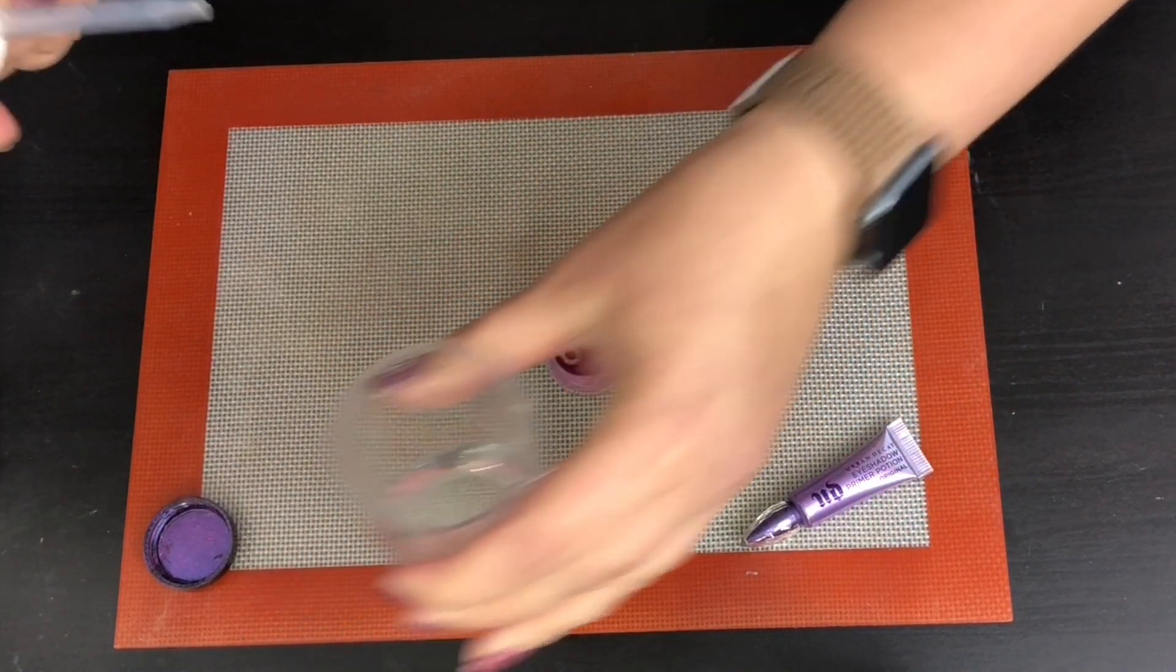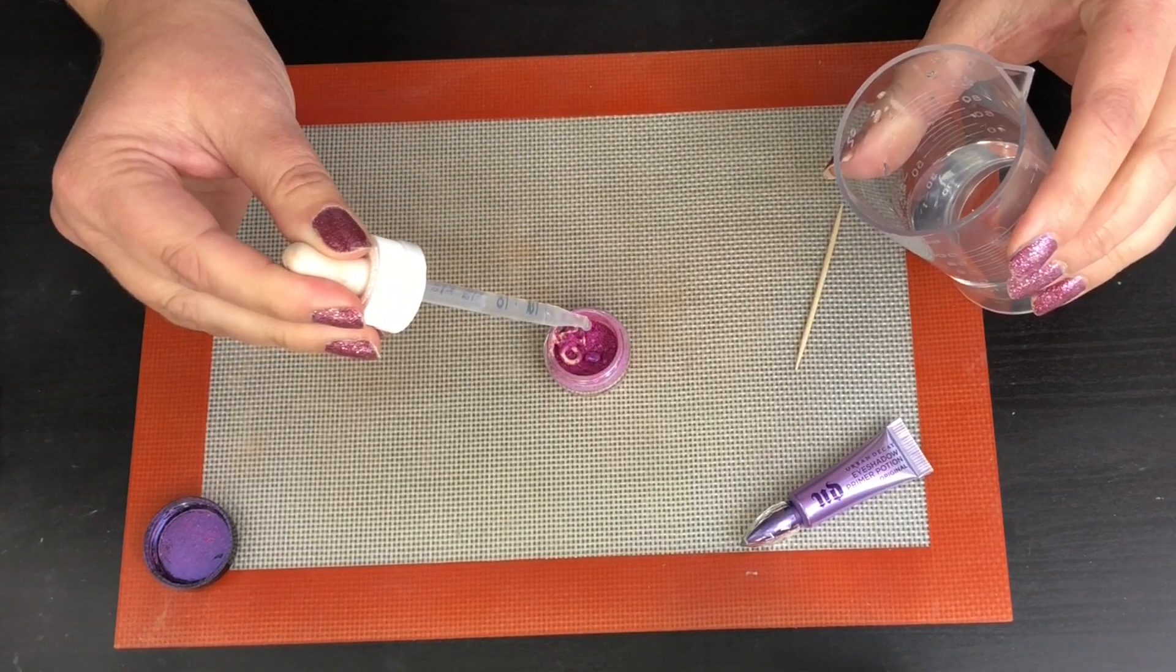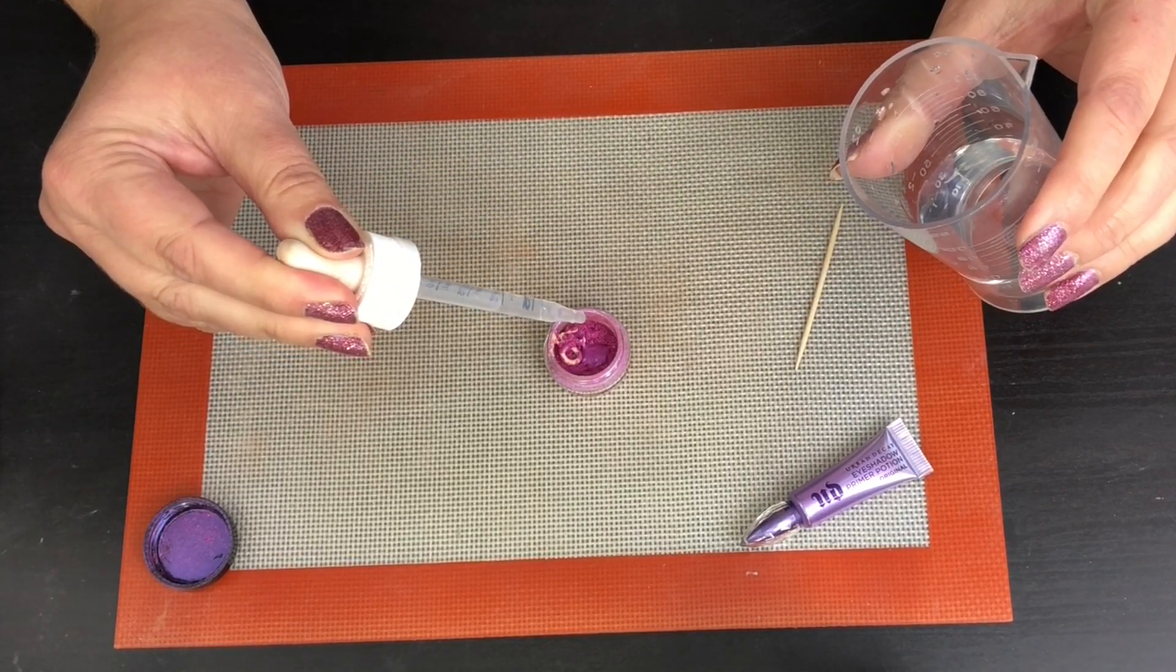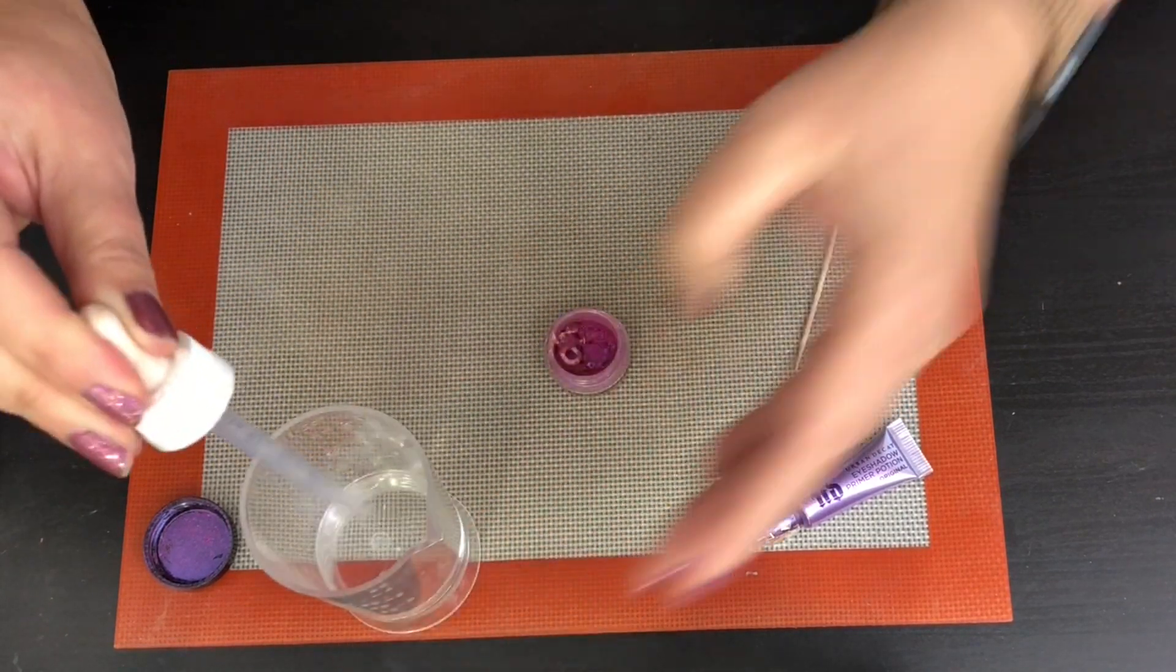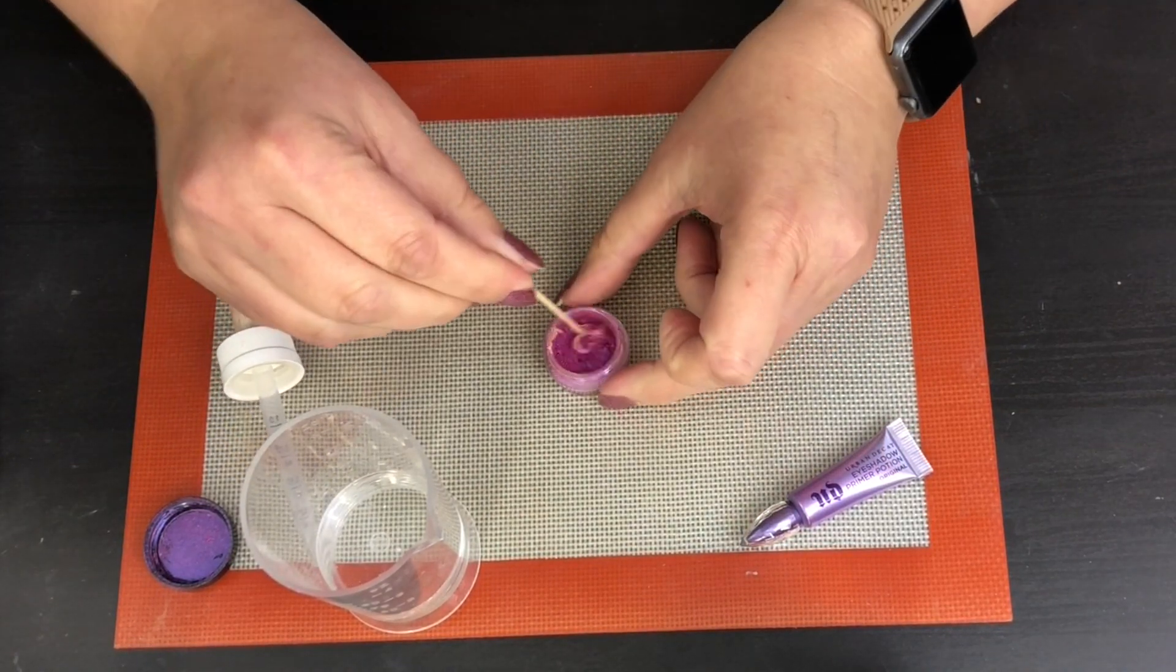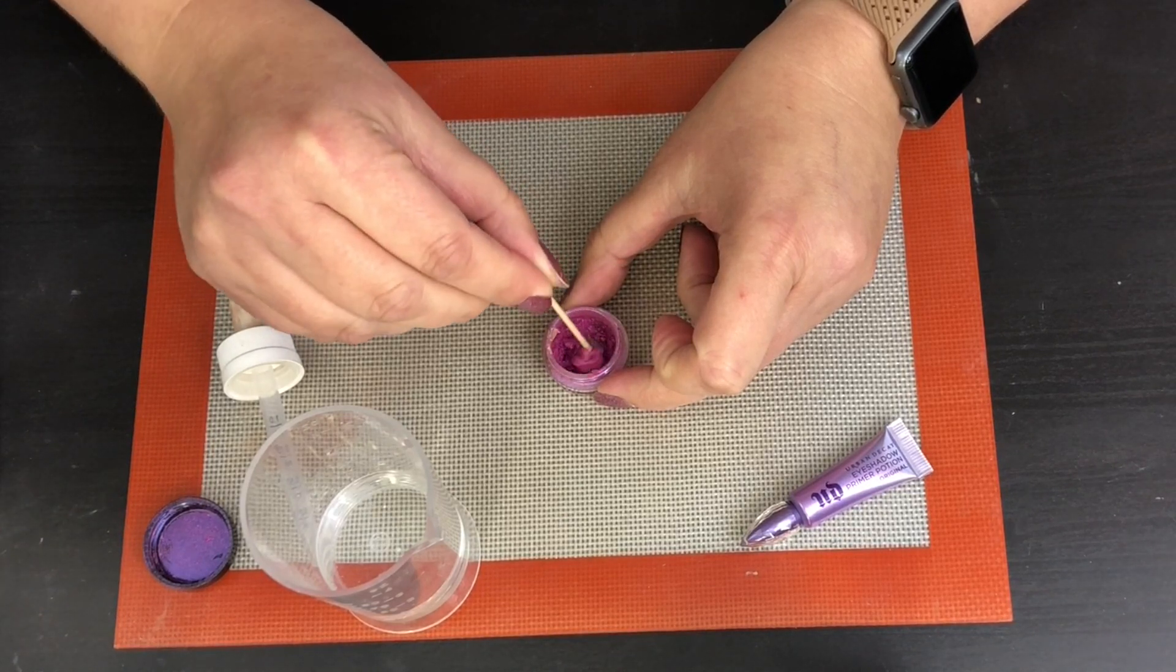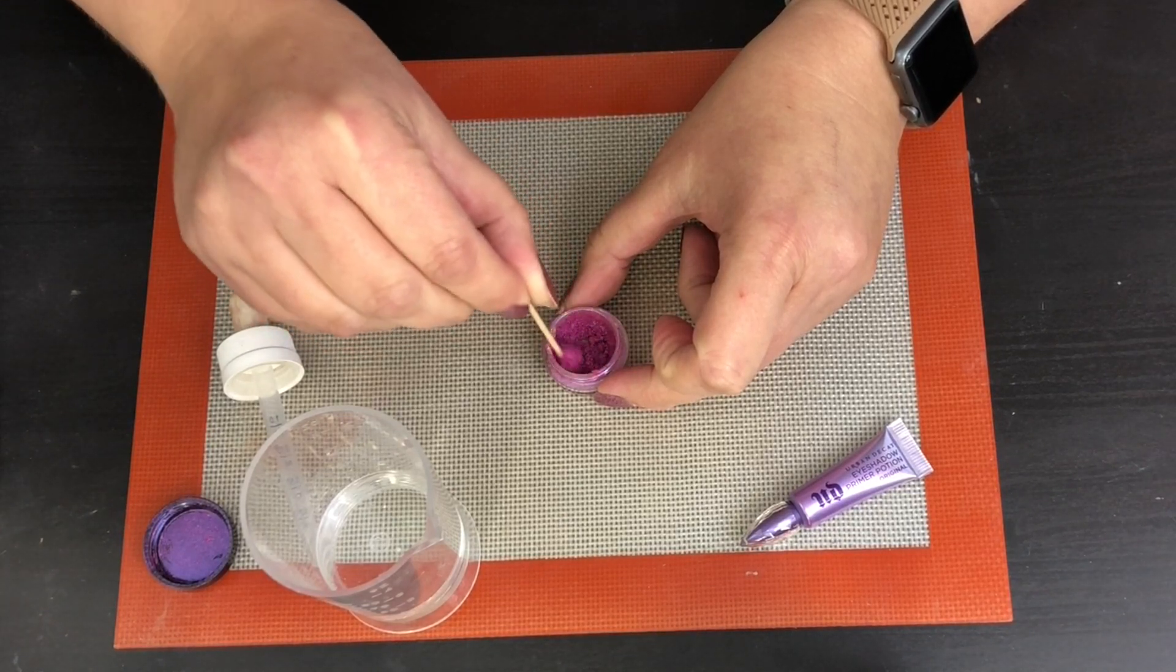Alright, so that is in there. I'm going to put a couple drops of water in there, actually I'll probably put about five, because we want to have it be able to stir it up a little bit. It is going to start to get a little clumpy but it will get better.